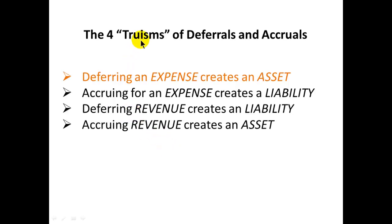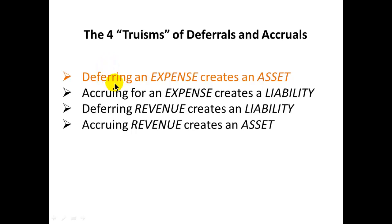There are four truisms, or rules, of deferrals and accruals. This is something you should memorize, but hopefully you won't have to once we go through the illustrations, because it will make perfect sense. The first truism: deferring an expense will create an asset.